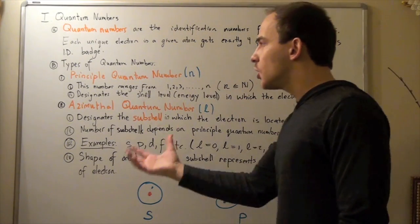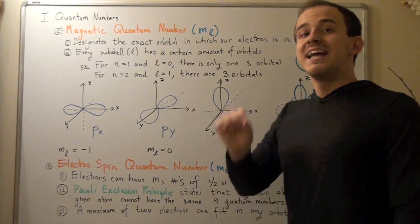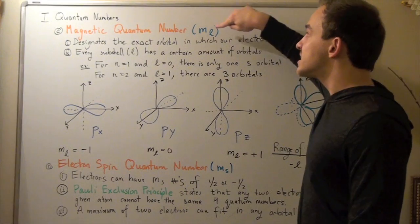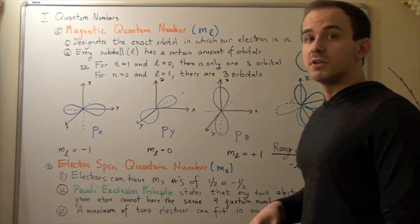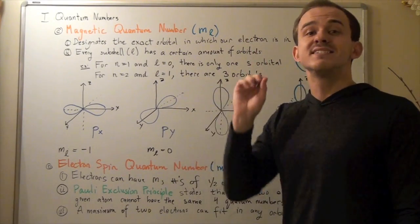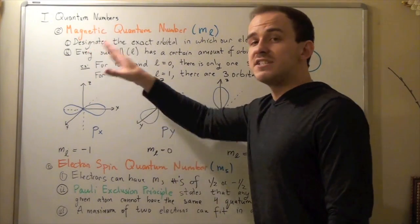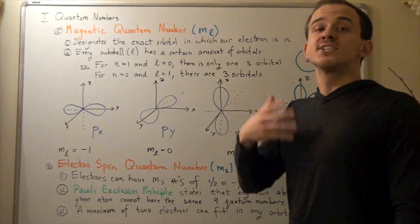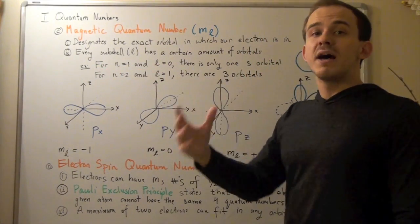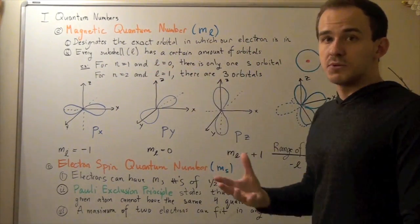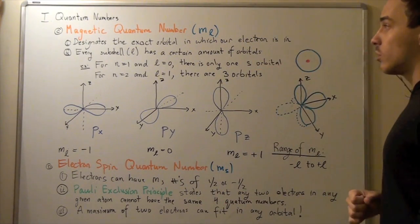The third quantum number is called the magnetic quantum number, designated by a lower case m with a subscript L — ML. The magnetic quantum number designates the exact orbital in which our electron is located. When L equals 0, we are talking about the S subshell, which has only one orbital, namely the S orbital.